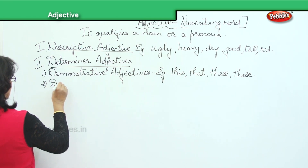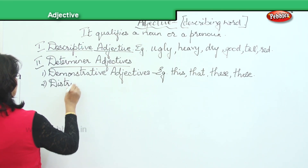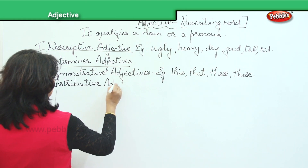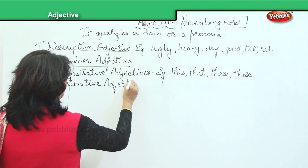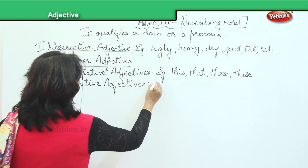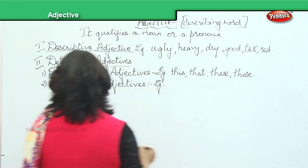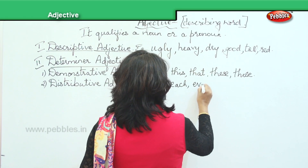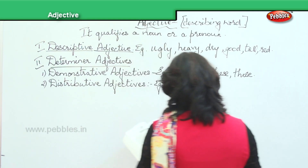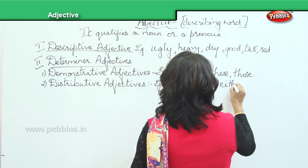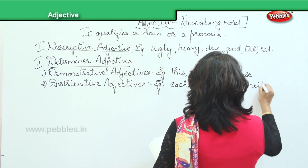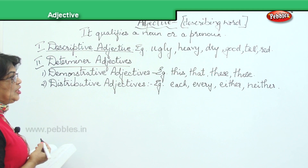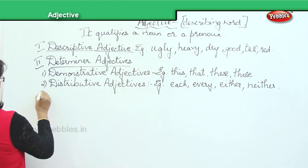Next: distributive adjectives. What are these? The examples are each, every, either, and neither. These are distributive adjectives.